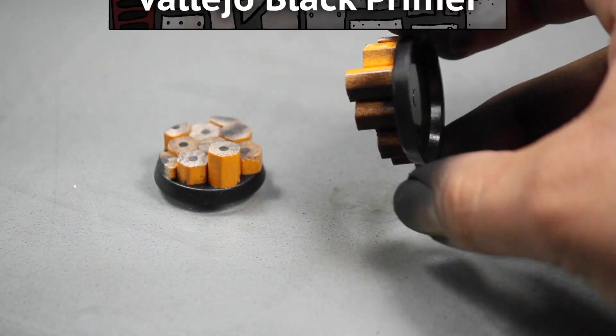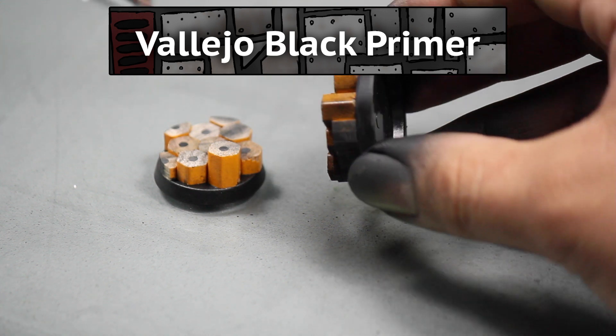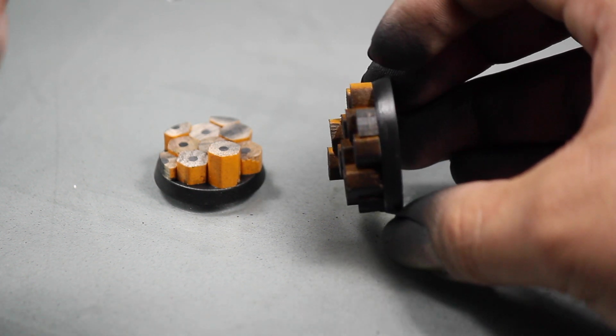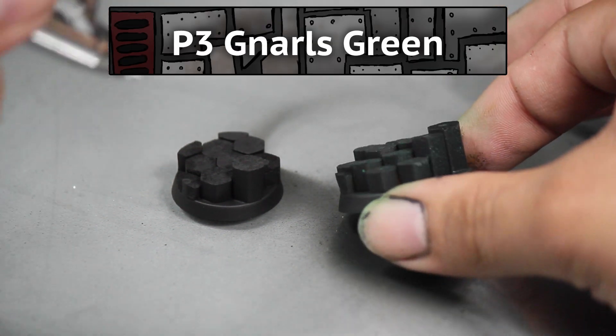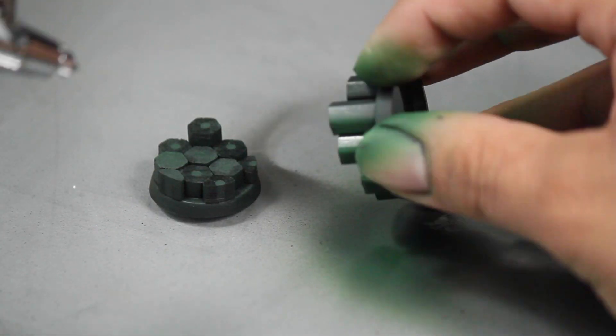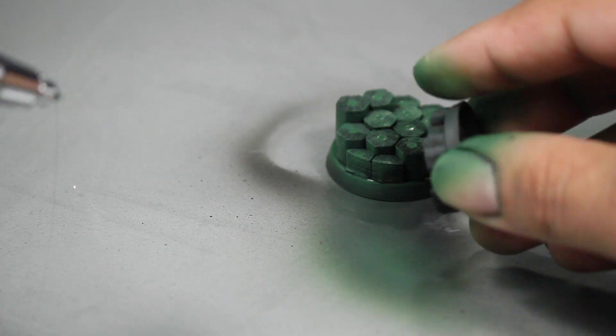Once that was done I primed the models black. I'm using an airbrush but you could also do this with a rattle can. Then I base coated the models with some P3 Gnarles Green. I again am using my airbrush to make the step go faster but you could easily apply it with a regular brush.